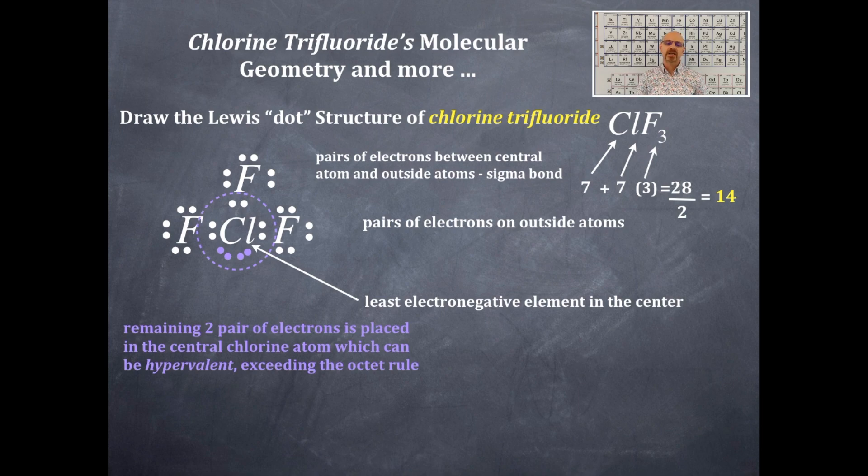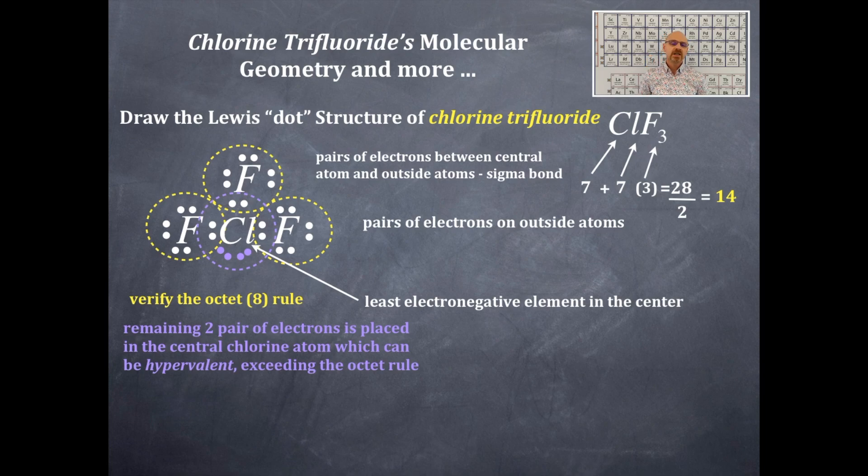Now we need to verify the octet rule for fluorine. That is verified right there because it's period two. Elements in period two have to have an octet and fluorine is one of them.